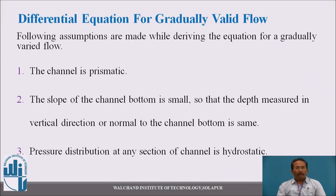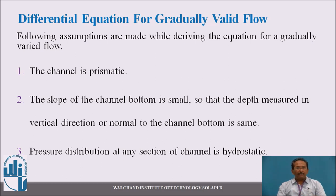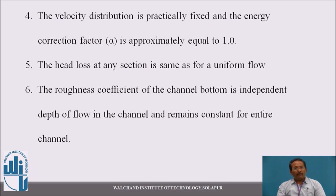Now we will look at the differential or dynamic equation for gradually varied flow. Before starting the derivation, we must assume some realistic conditions: the channel is prismatic; the slope of the channel bottom is small enough so that depth measured vertically equals depth normal to the channel; pressure distribution is hydrostatic throughout; velocity distribution is practically fixed; the head loss at any section is the same as for uniform flow; and the roughness coefficient of the channel bottom is independent of the flow.